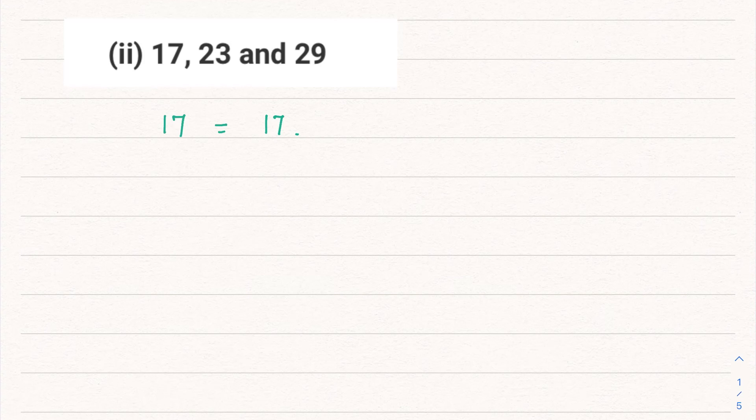Second part: 17, 23, and 29. 17 is a prime number, that means it has only two factors—that is 1 and the number itself. So I can write this as 17 × 1.